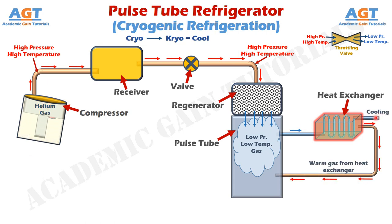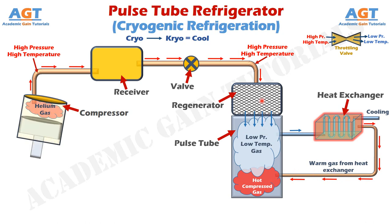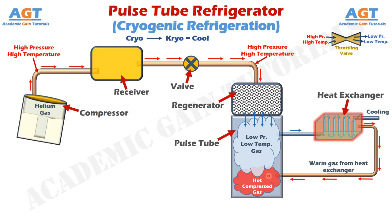After doing its work of cooling in the heat exchanger, the gas will come back to the pulse tube. Since the cold gas was passed to the heat exchanger for doing its cooling effect, while coming out of the heat exchanger we get comparatively high temperature gas entering the pulse tube through this pipe. At the same time, cool gas supply is coming from this side through the regenerator, and the warm high temperature gas is coming through this side from the heat exchanger. So this cool low temperature gas will apply pressure on this warm comparatively high temperature gas, and compress it in the closed bottom end portion of this pulse tube.